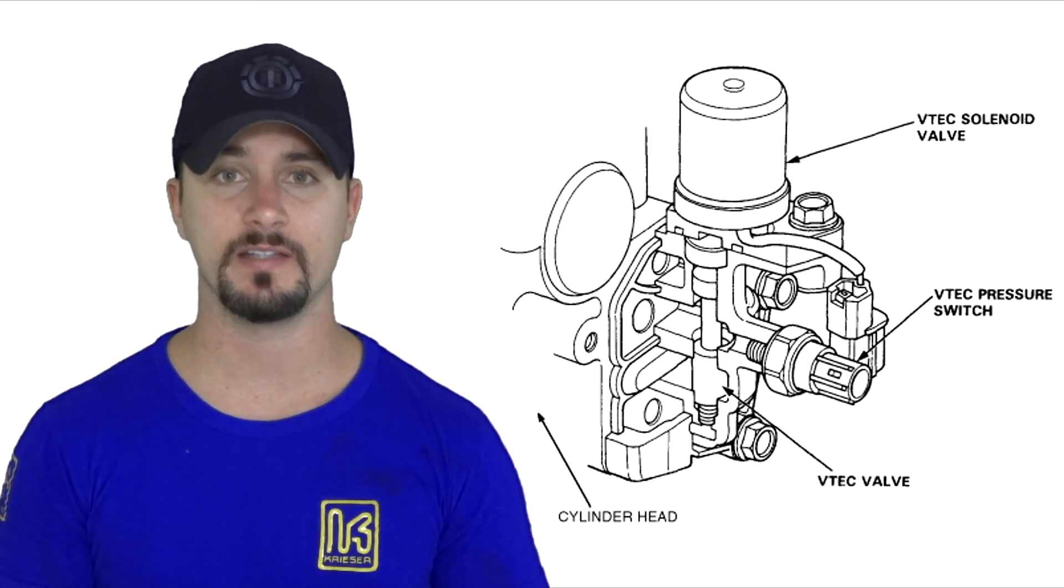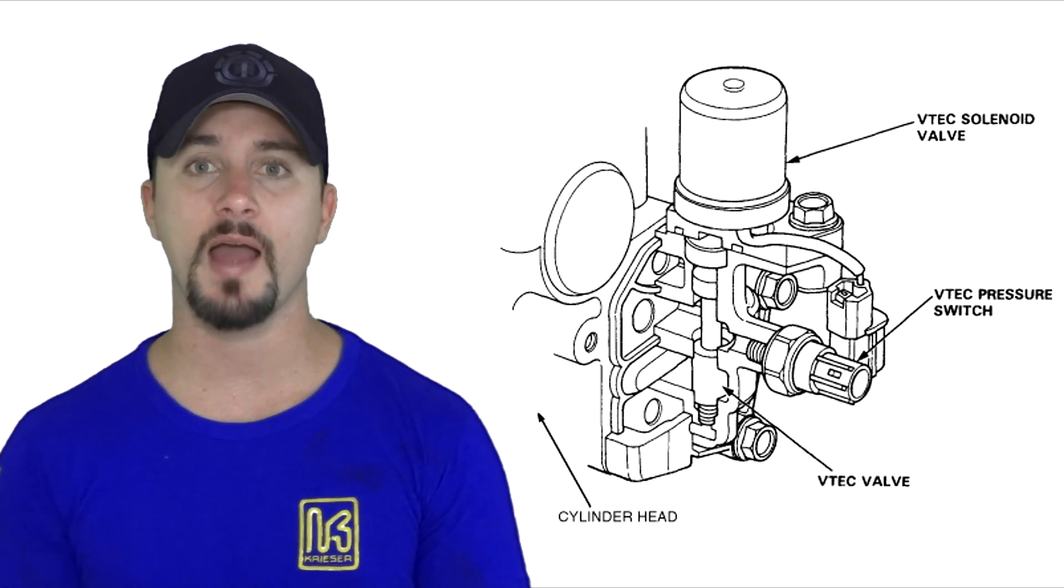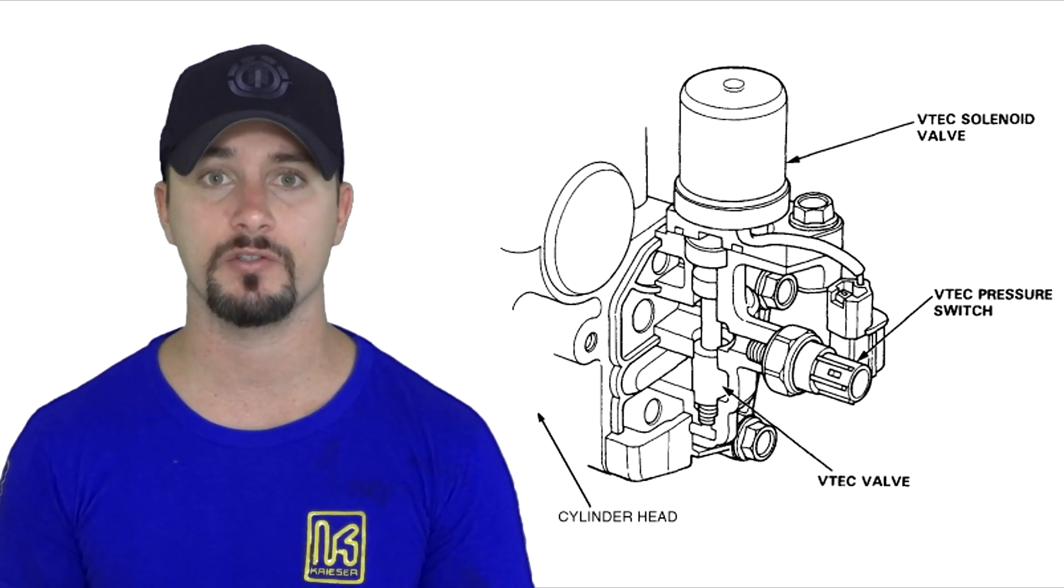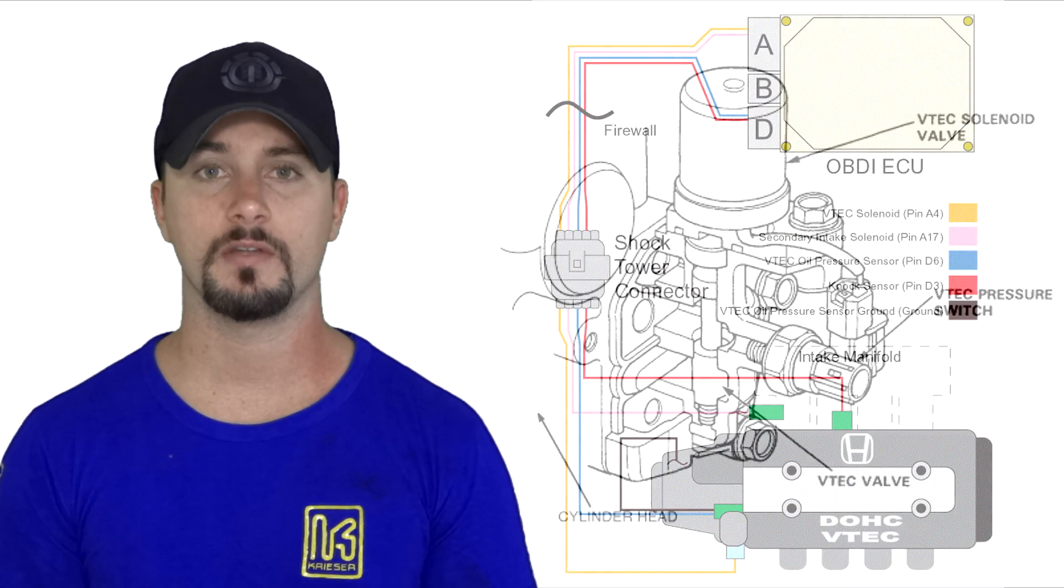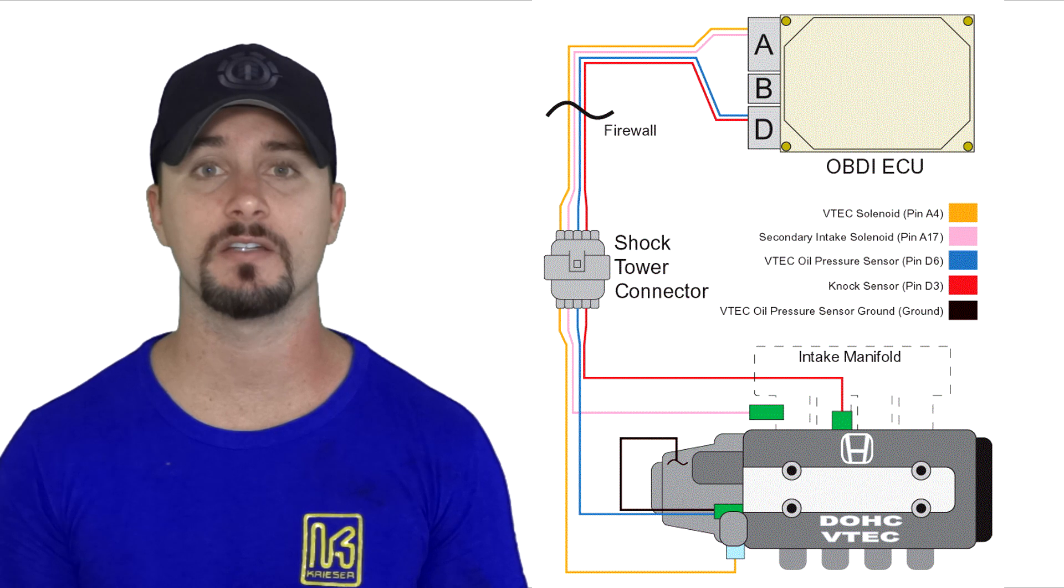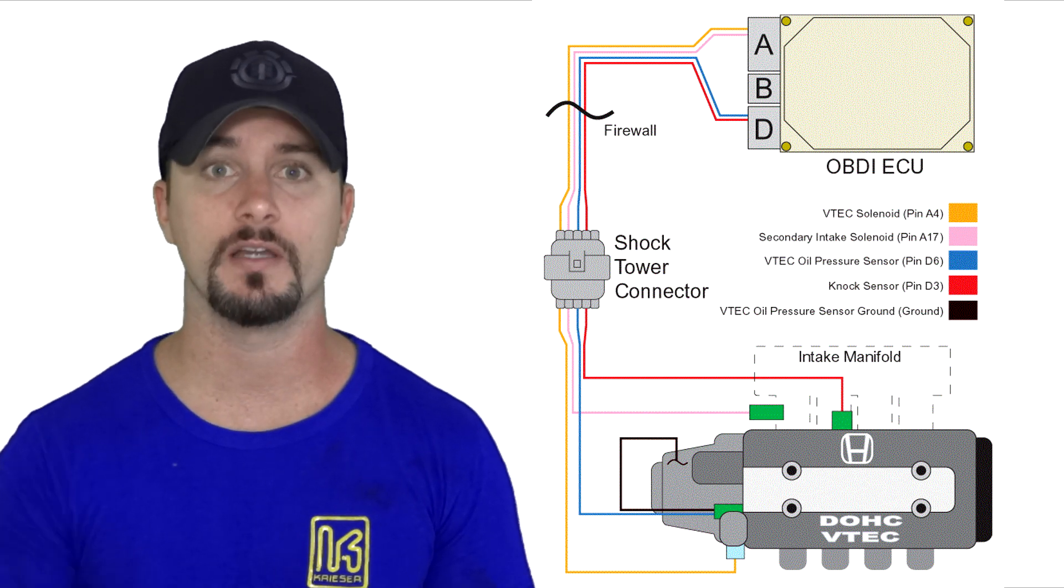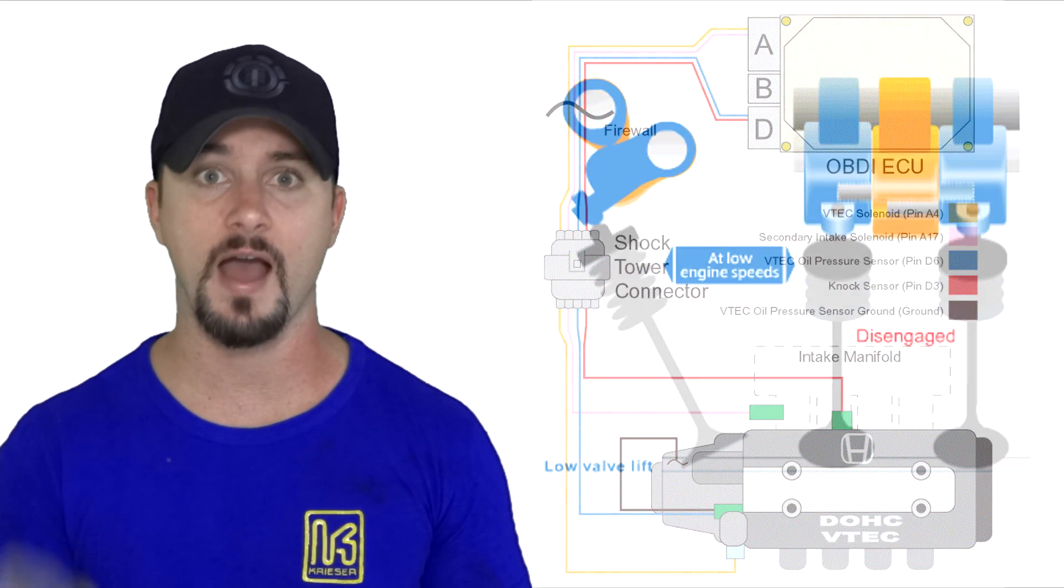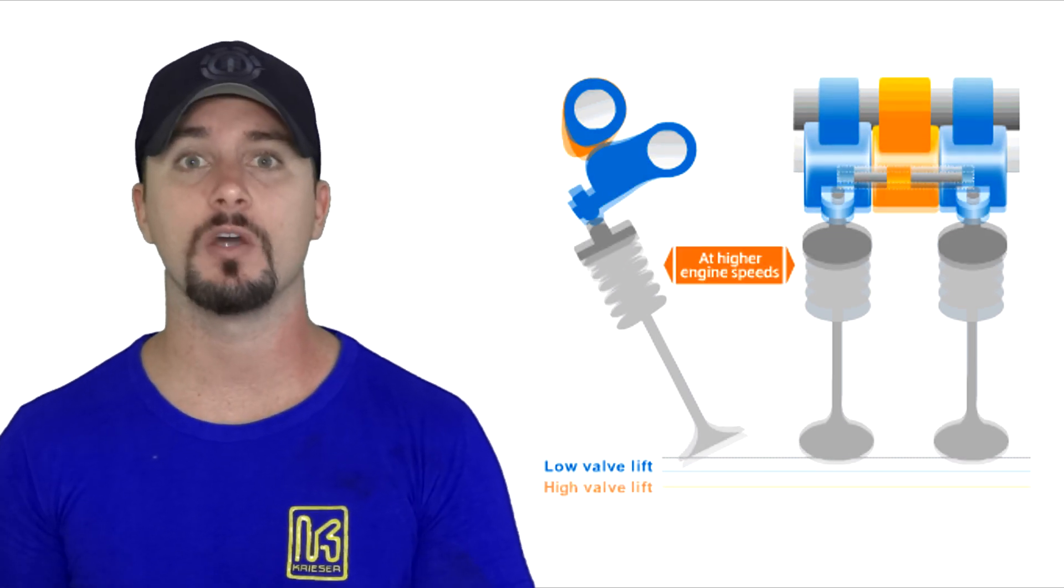The pressure switch on the solenoid sends a signal back to the ECU, the Electronic Control Unit, telling it that it has on and off oil pressure. The ECU then verifies the signal coming from the RPMs and verifies that it's at 4500, then it sends a signal to the VTEC solenoid and engages VTEC through the valve. The valve goes up and releases the oil pressure through the synchronizing pistons in the rocker arms.